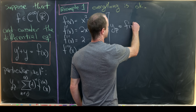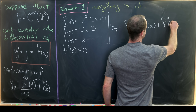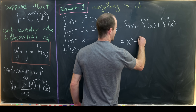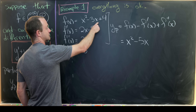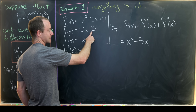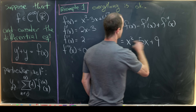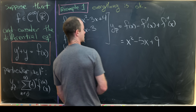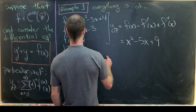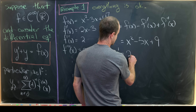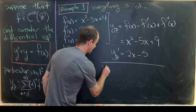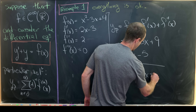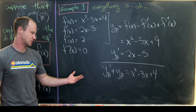So yp = f(x) - f'(x) + f''(x) = (x² - 3x + 4) - (2x - 3) + 2 = x² - 5x + 9. We can verify this: yp' = 2x - 5, and yp' + yp = (2x - 5) + (x² - 5x + 9) = x² - 3x + 4, which matches our original forcing function. Everything checks out.